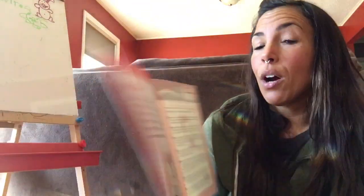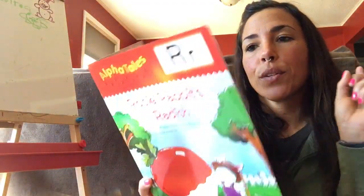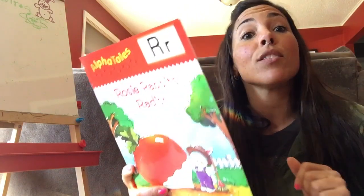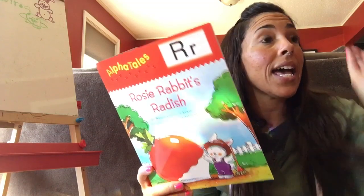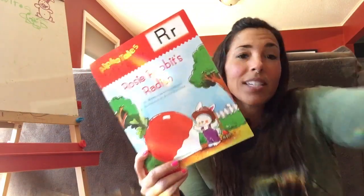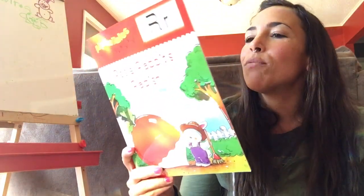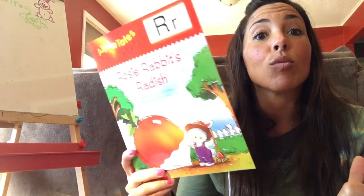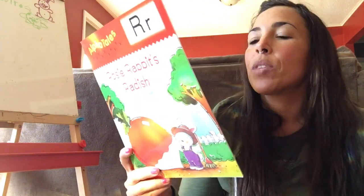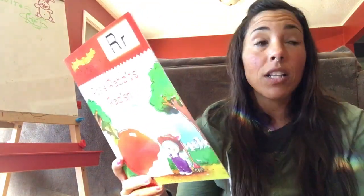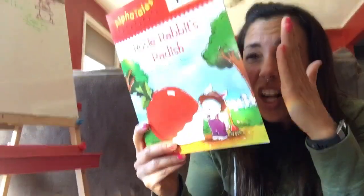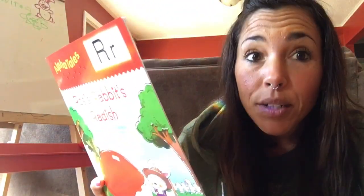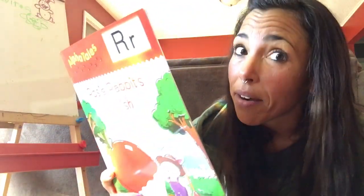Are you ready for the R poem? R is for rabbit, radish, and rose. R is for ribbon and a rooster that crows. R is for run, rope, rock, and red — the color red. R is for raindrops that fall on your head. Hooray for R, big and small — the most remarkable letter of all.